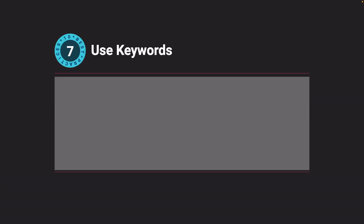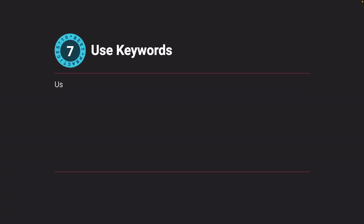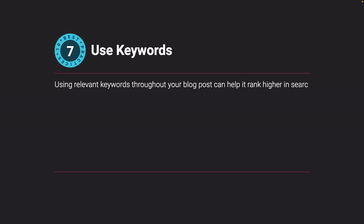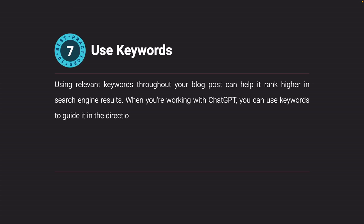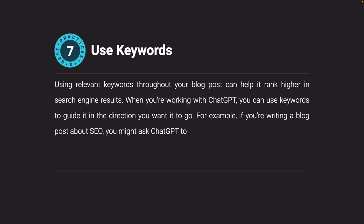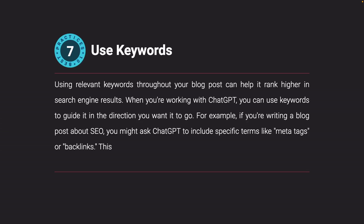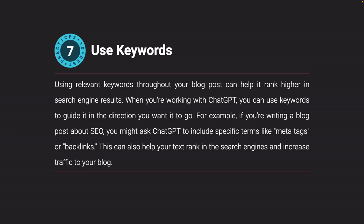Use keywords. Using relevant keywords throughout your blog post can help it rank higher in search engine results. When working with ChatGPT, you can use keywords to guide it in the direction you want it to go. For example, if you're writing a blog post about SEO, you might ask ChatGPT to include specific terms like meta tags or backlinks. This can also help your text rank in search engines and increase traffic to your blog.